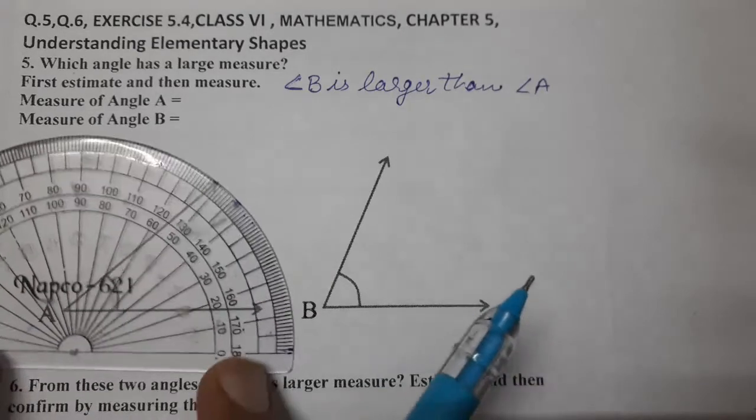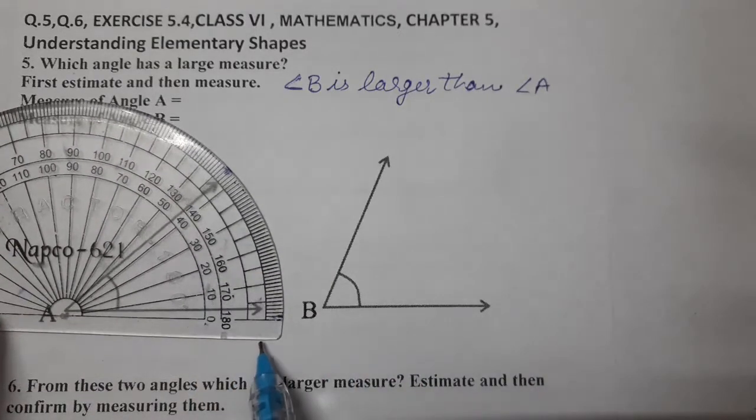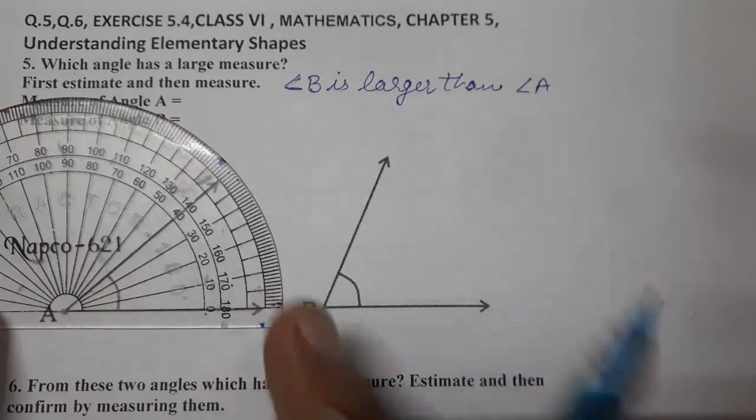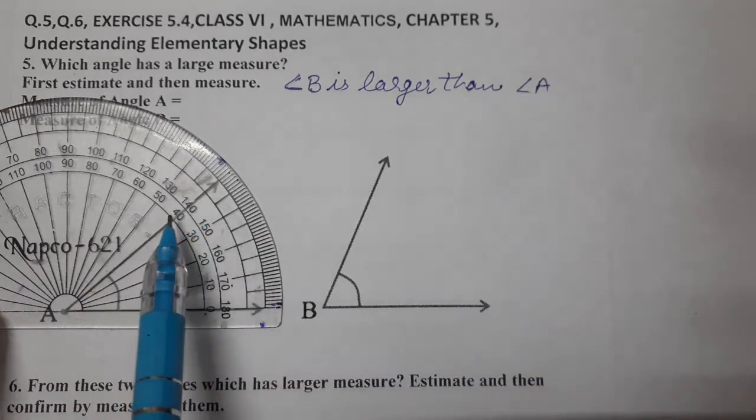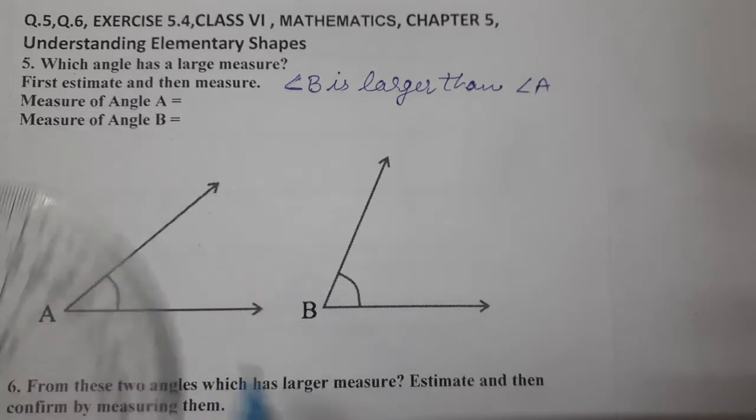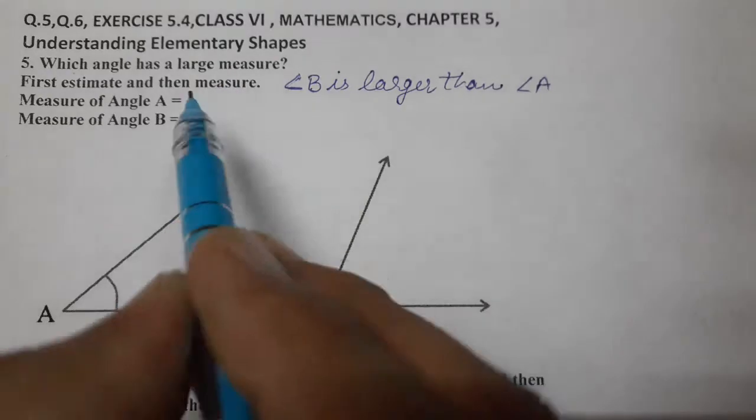Put the protractor on the left side, so see 40 degrees on the left inner scale. Left inner, 40 degrees is coming. So write 40 degrees, measure of angle A is 40 degrees.